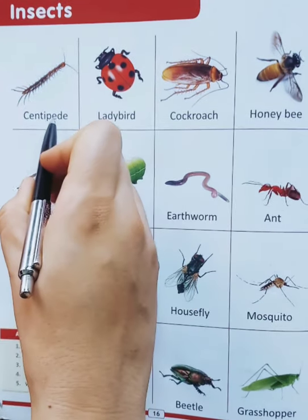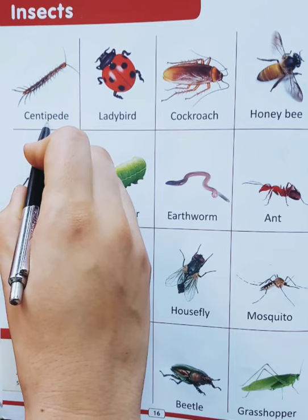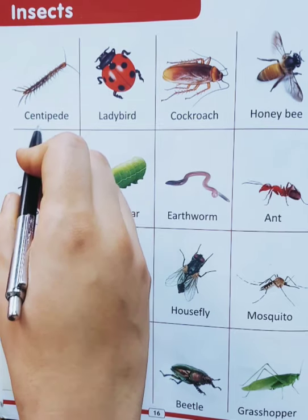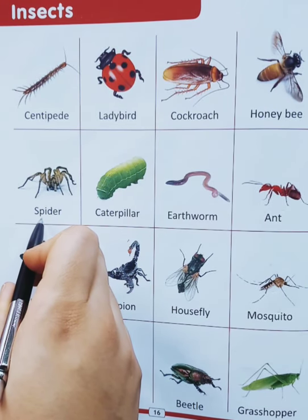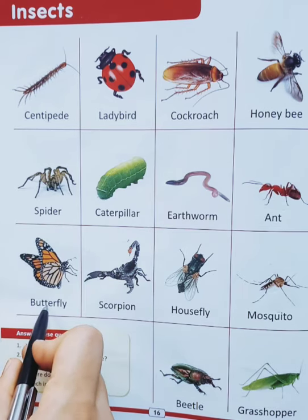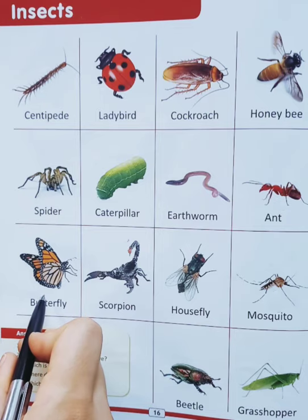Which picture is this? This picture is centipede. And this is spider. This is spider. And this is butterfly. This is butterfly.